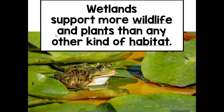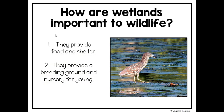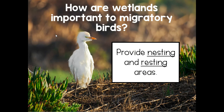Wetlands are really special because they actually support more wildlife and plants than any other kind of habitat. They are important to wildlife because they provide food and shelter, a breeding ground and a nursery for young animals. Wetlands are also important to migratory birds, providing nesting and resting areas.